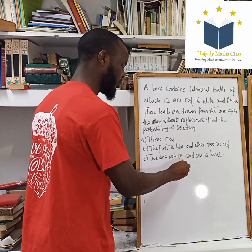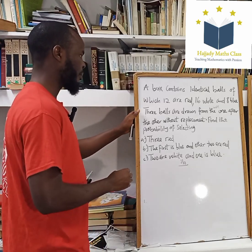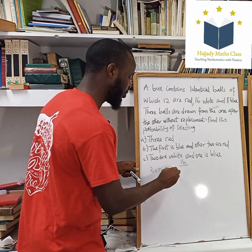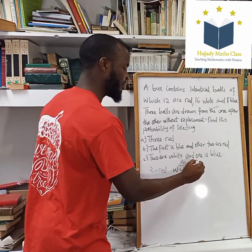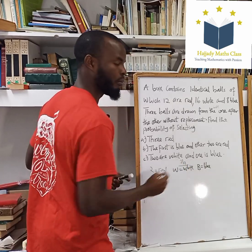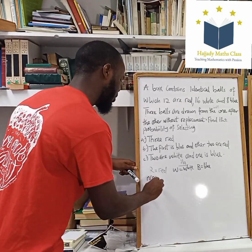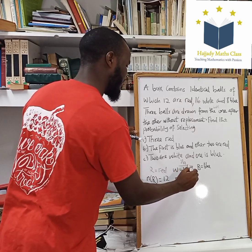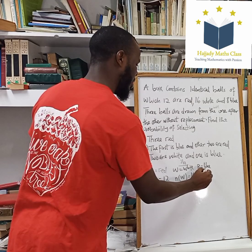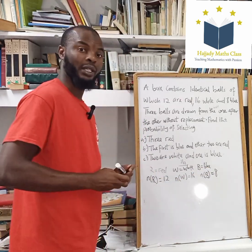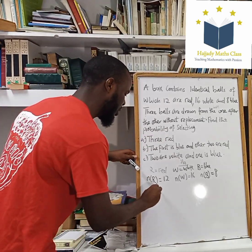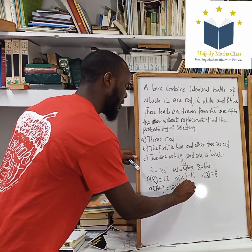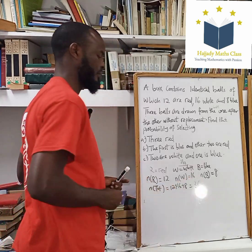Now solving this, the same approach we used in our previous question is the same approach we're going to use today. Let R represent red balls, let W represent white balls, and let B represent blue balls. The number of red balls we have is 12, the number of white balls is 16, and the number of blue balls is 8. So the total number of balls, T, is 12 plus 16 plus 8, which gives us 36.